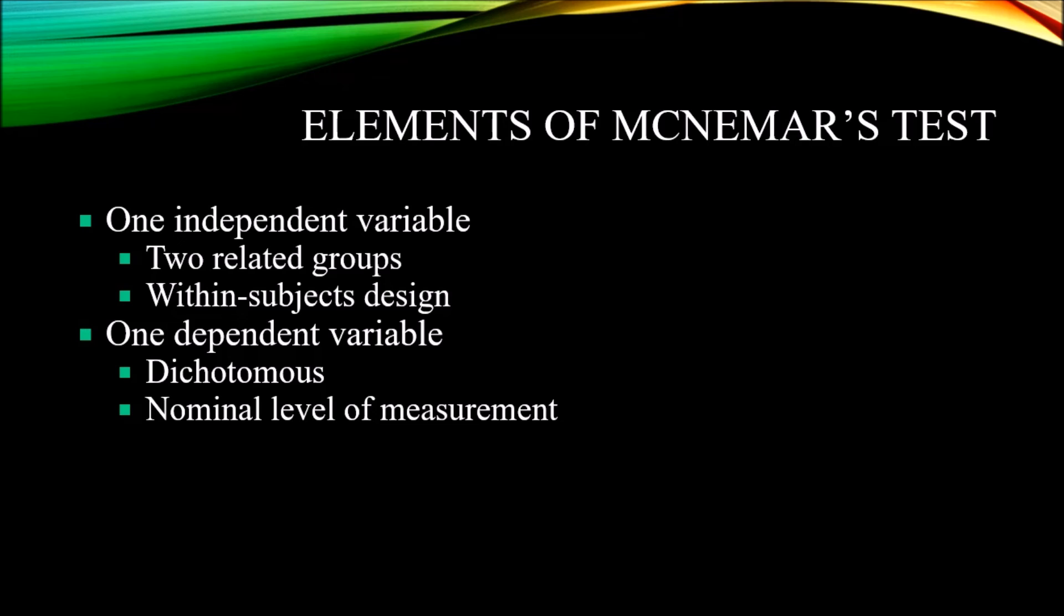Now, let's take a look at the elements of a McNemar's test. For a McNemar's test, we have one independent variable. It has two related groups. Again, this is a within-subjects design. This is the same participant being measured twice, instead of different participants being measured once.